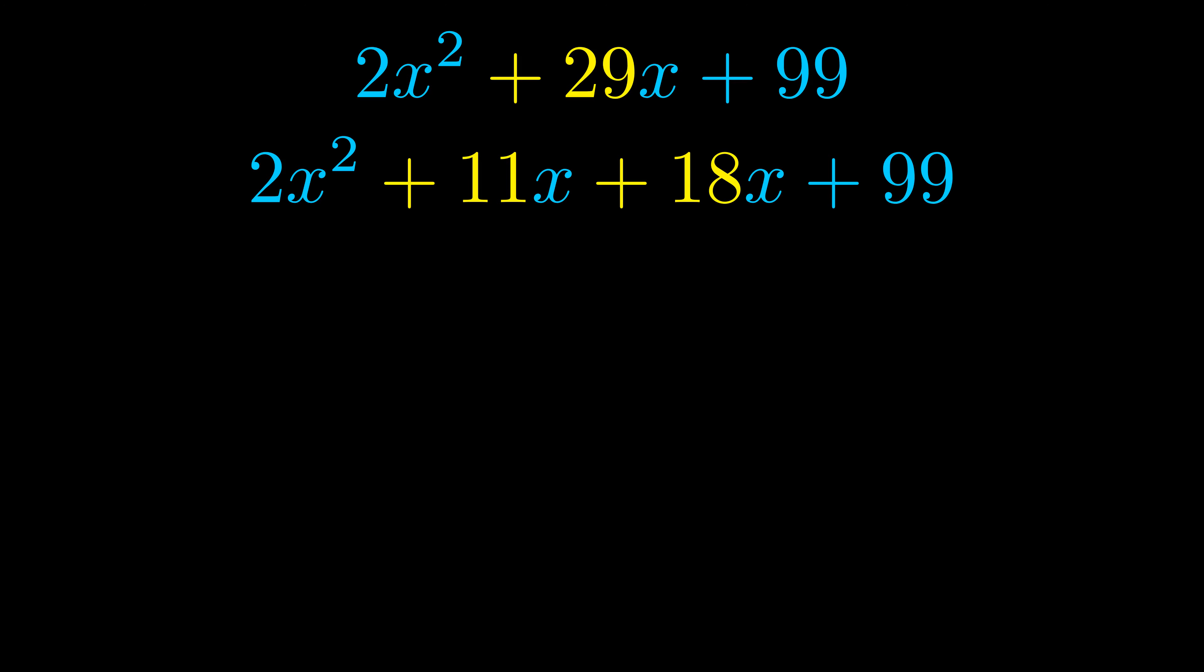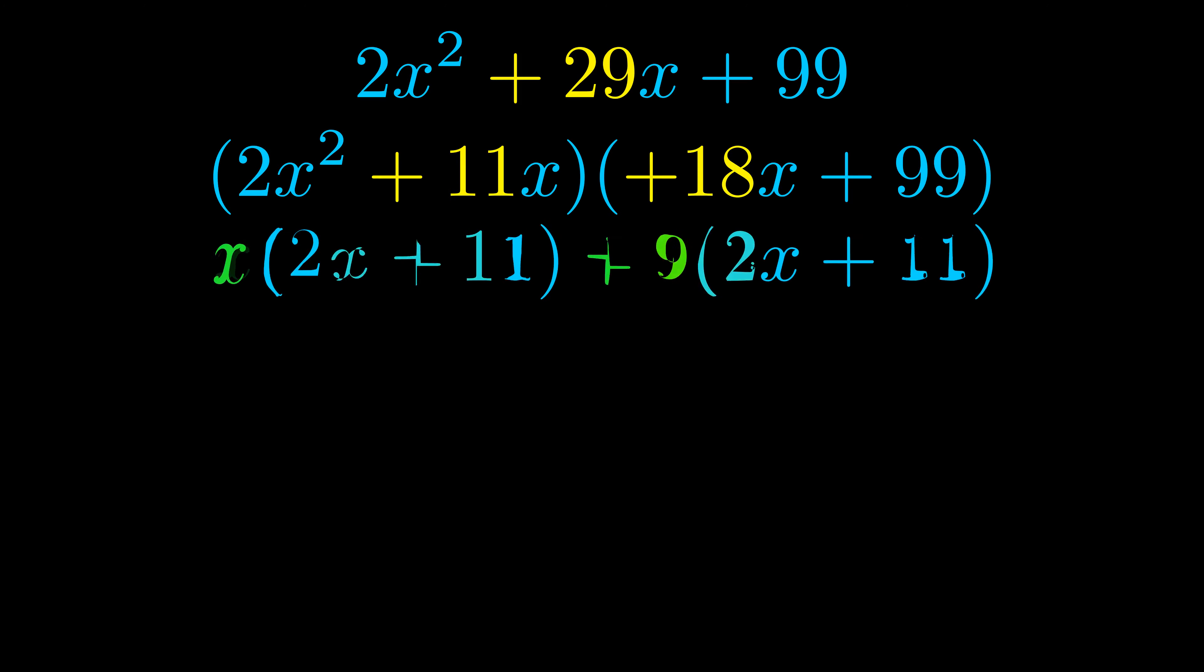Once we've done this we go ahead and we put parentheses around the first term and the last term. And we do that so that we can take the greatest common factor out of both terms. We can see the greatest common factor is now outside in green. Notice also how what remains inside of the parentheses is the same in both cases.